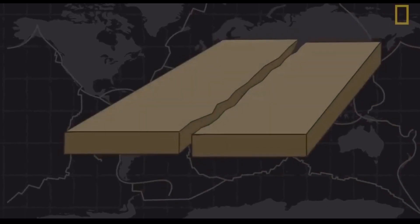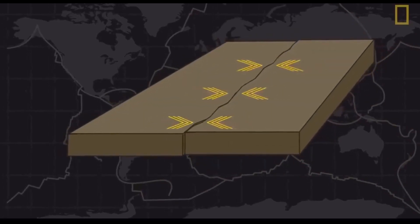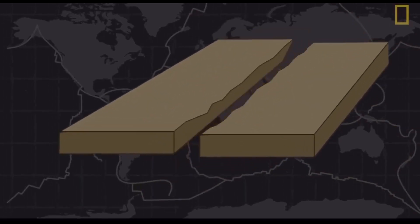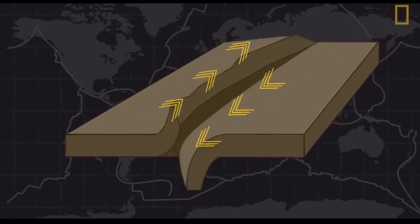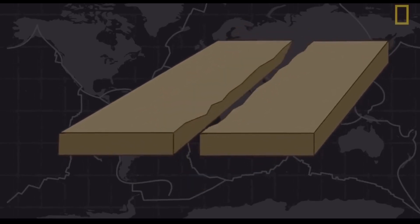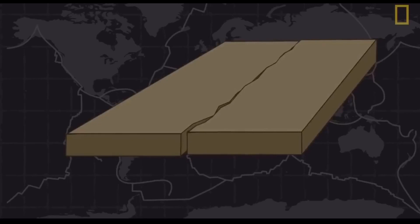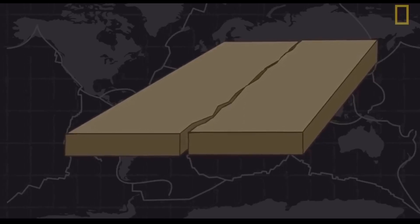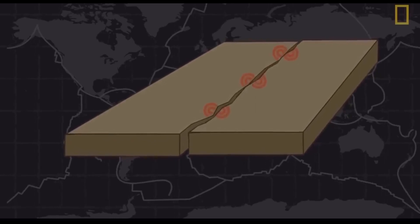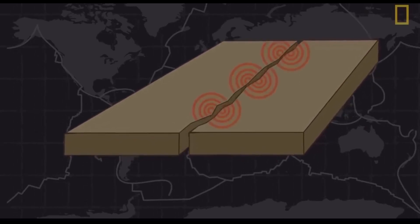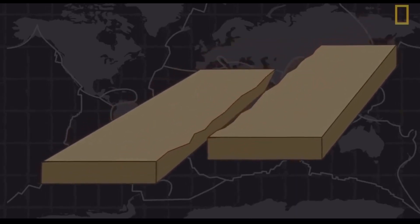So how do we get earthquakes? It's all about the movement of plates - whether they're moving past, under, or into each other. As they do, these movements cause them to catch on each other, and this catching creates friction which builds up stress. Eventually when they finally move past each other, it releases that stress into the crust as seismic waves, which is our earthquake.